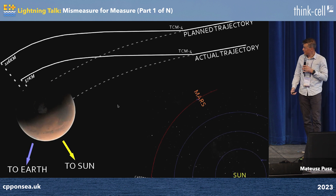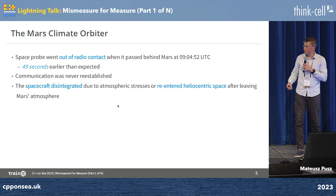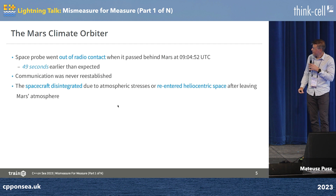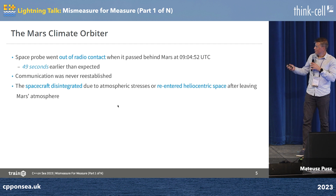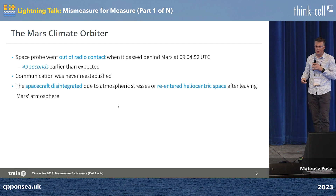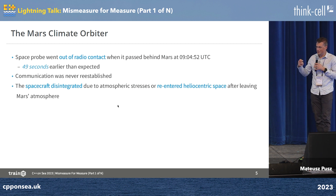There was some mistake involved in the calculations, and as a result the space probe went out of radio contact about 20 to 49 seconds earlier than expected. Communication was never re-established, and the space probe probably either disintegrated in the Mars atmosphere or re-entered heliocentric space after leaving Mars orbit.